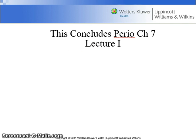Secondary occlusal trauma is injury to the periodontium from normal occlusal forces applied to a periodontium that has previously been damaged by periodontitis. Secondary occlusal trauma may result in rapid bone loss and pocket formation. This concludes Perio Chapter 7, Lecture 1.